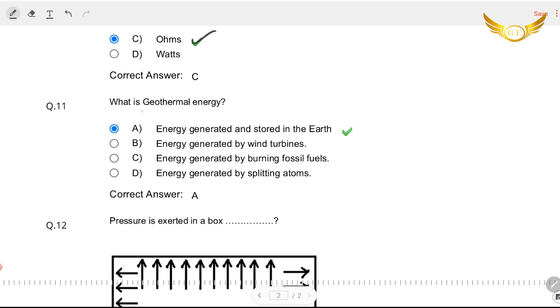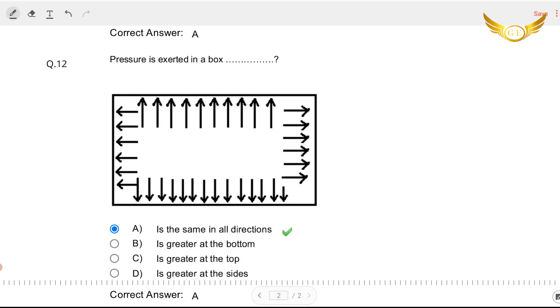What is geothermal energy? We had the same in the last question paper as well. It is energy generated and stored in the earth. Now you'll never forget it that you've done it twice. So this is the right answer. This too is a repeat question. Pressure is exerted in a box, it's all in the same direction. A is the right answer.